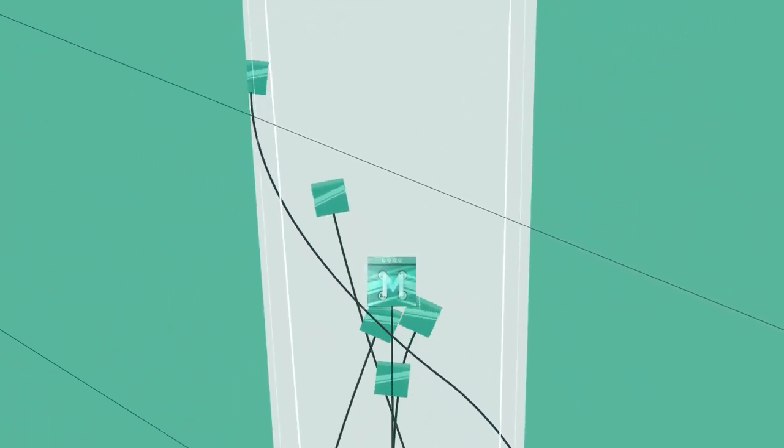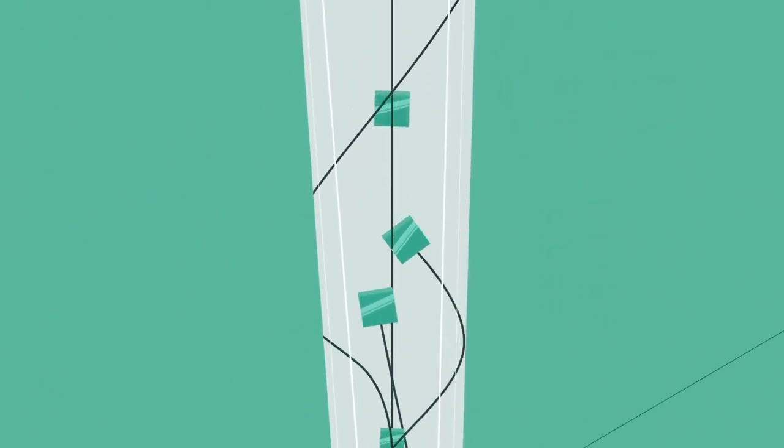Each MintLayer block has a reference to a Bitcoin block, so that the two chains are always coupled together.